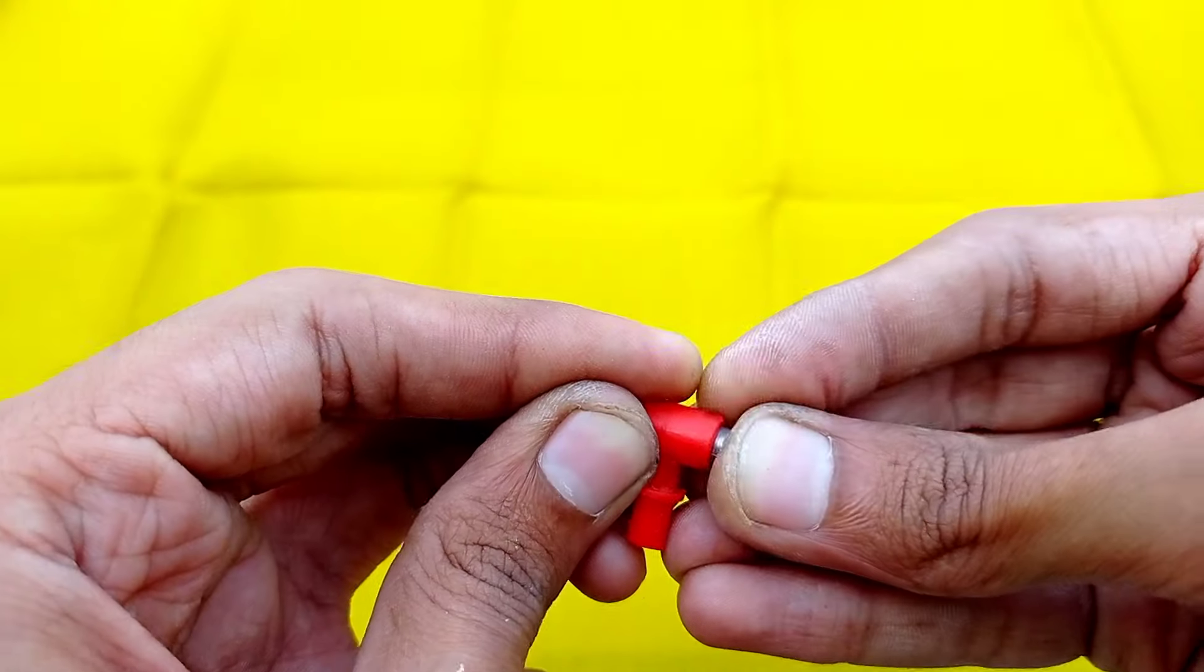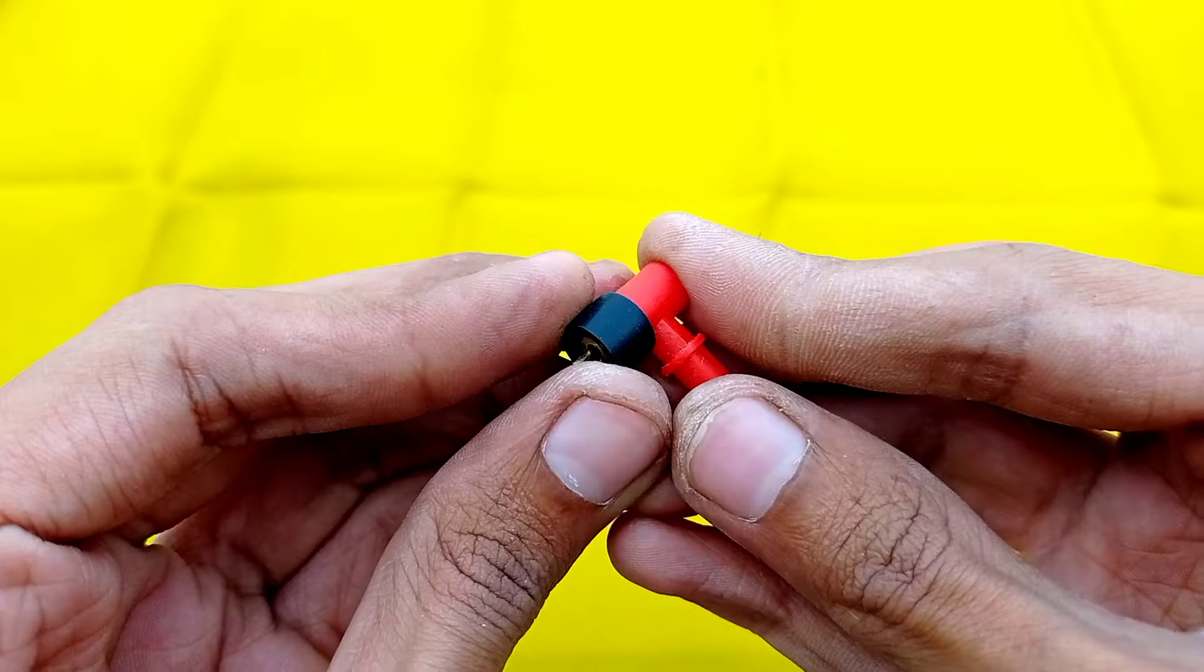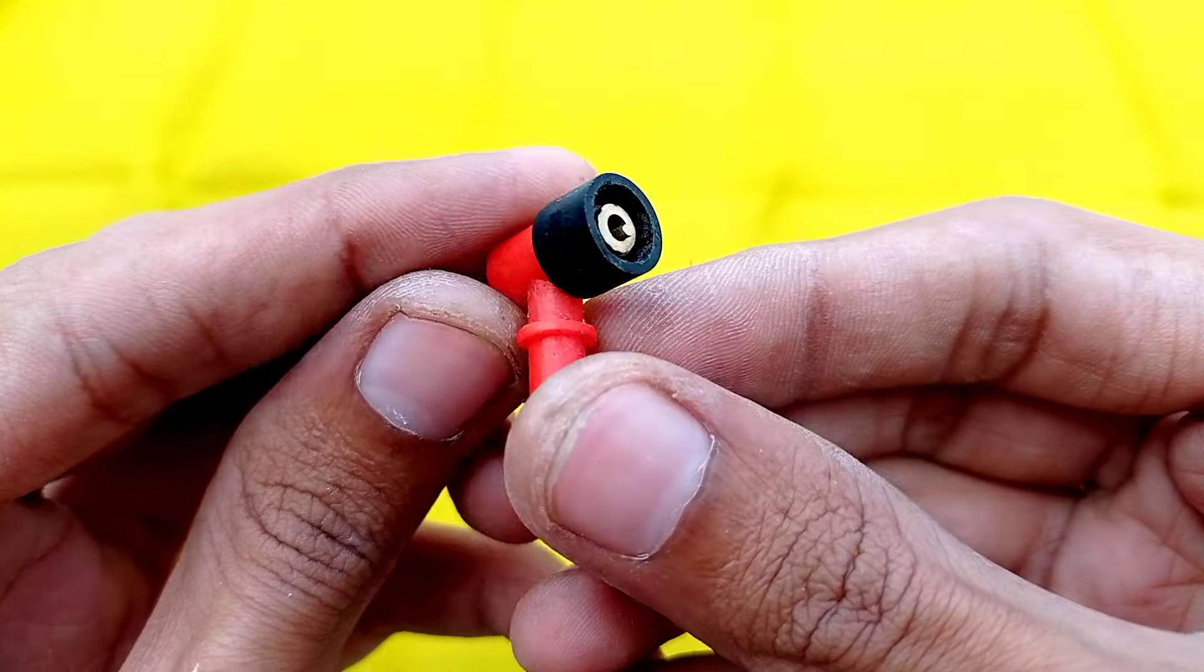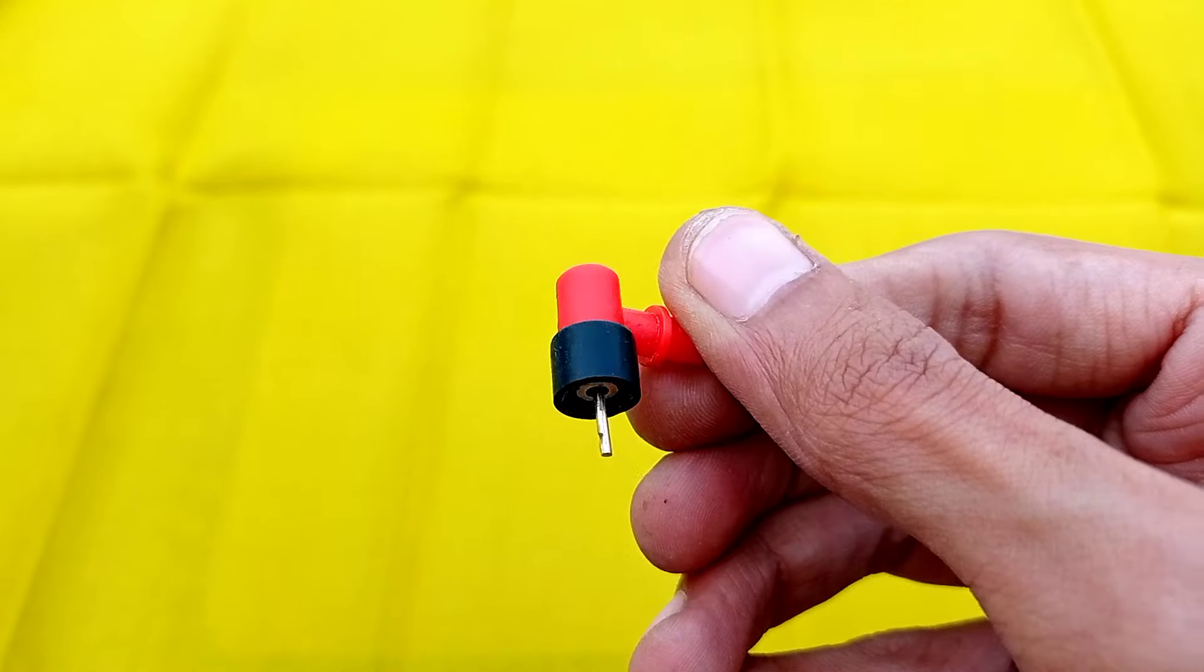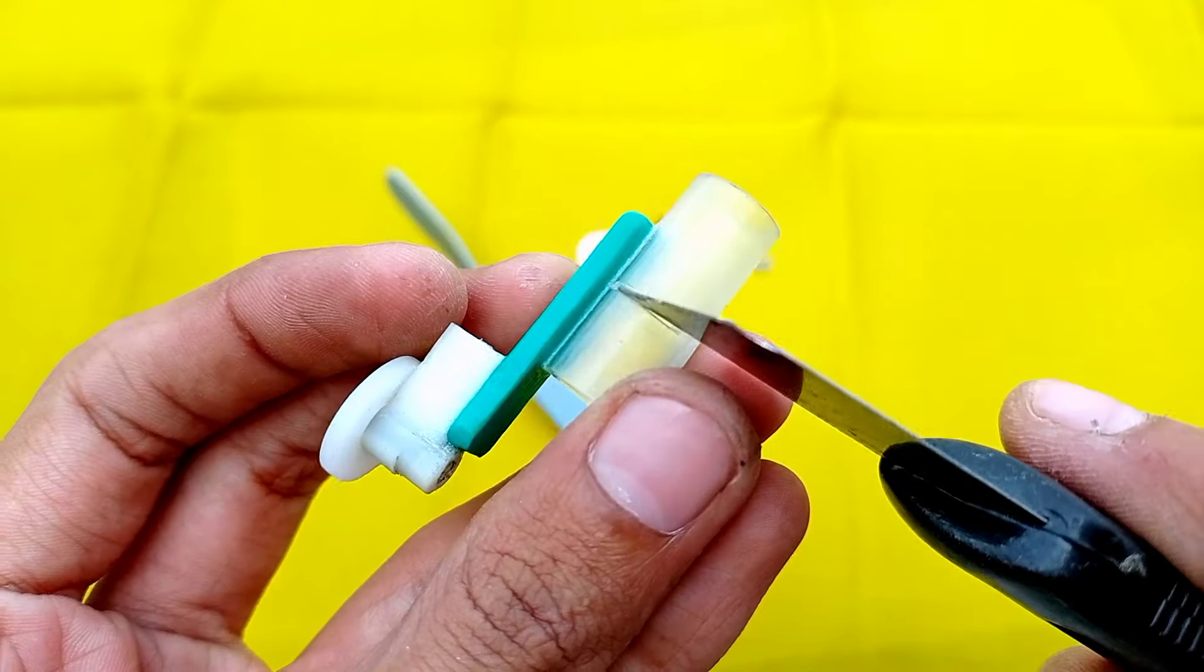Now our valve mechanism is ready to insert and attach inside the main engine body. Let's attach this valve on the top of our cylinder. After making all the parts of our engine, let's assemble it.